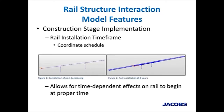Here's how the construction sequence is implemented. On the left is the structure at completion of post-tensioning. For our analysis, we typically varied between looking at one year and two years after completion of bridge construction for installation of the ballast and the rail. You flip between your construction sequences to see how the rail gets installed, and that involves coordination with the owner or contractor to determine the schedule for rail installation.